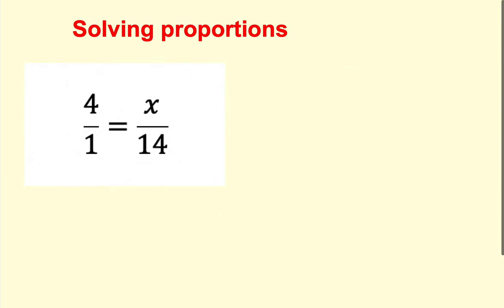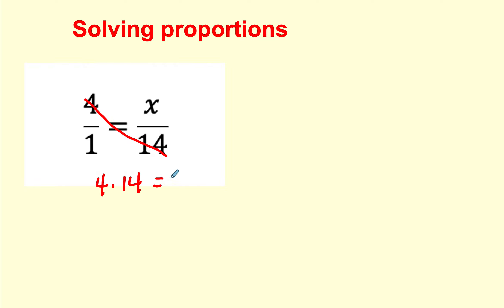Let's take a look at solving proportions. Solving proportions means you cross multiply. So this will be 4 times 14 is equal to x, and x will be equal to 56.